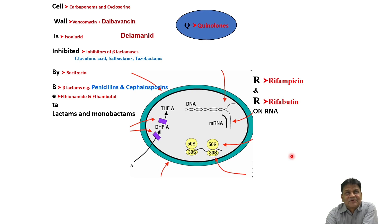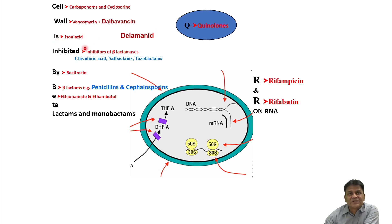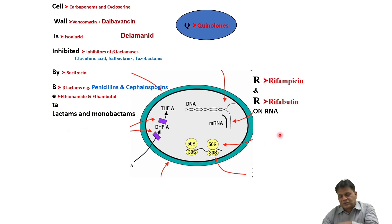Cell wall synthesis is inhibited by beta-lactams. C is for carbapenems and cycloserine; W for vancomycin, and newer additions are dalbavancin and delamanid — used in tuberculosis treatment and as vancomycin replacement for MRSA. I is for isoniazid, used in Mycobacterium tuberculosis infection. B is for bacitracin; beta-lactam antibiotics include penicillin and cephalosporins. E is for ethionamide and ethambutol, drugs used in tuberculosis. Other beta-lactams include the monobactams.